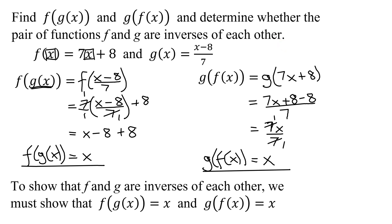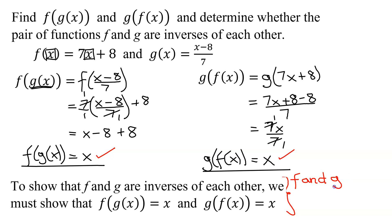To show that f and g are inverses of each other, we must show that f composed with g of x equals x — which is what I did up here — and g of f of x equals x — which is what I did right here. So since both of them equal x, I know that f and g are inverses of each other. So I've completed the problem.